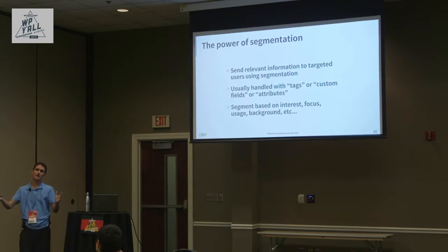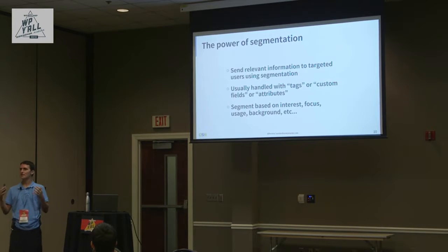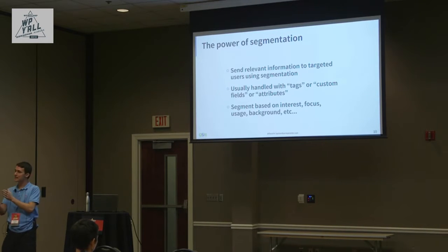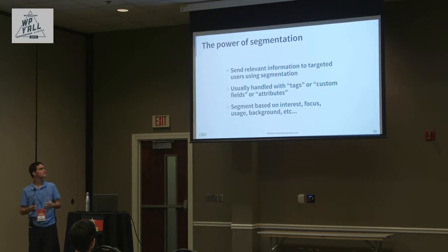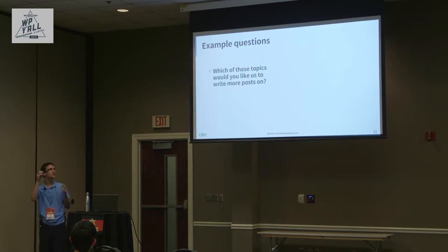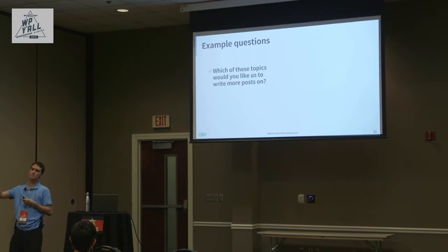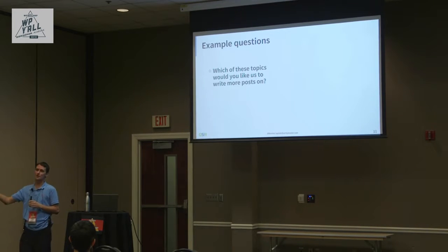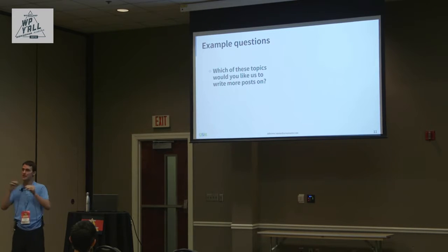For example, if you have a large audience and you write about both surveys and business, not everyone wants to read everything. You could ask 'Which of these topics would you like to see us write more about?' with options like surveys, business, or other topics. Whatever they select, you tag them in your marketing automation software — like MailChimp or ActiveCampaign — and send them only relevant content.